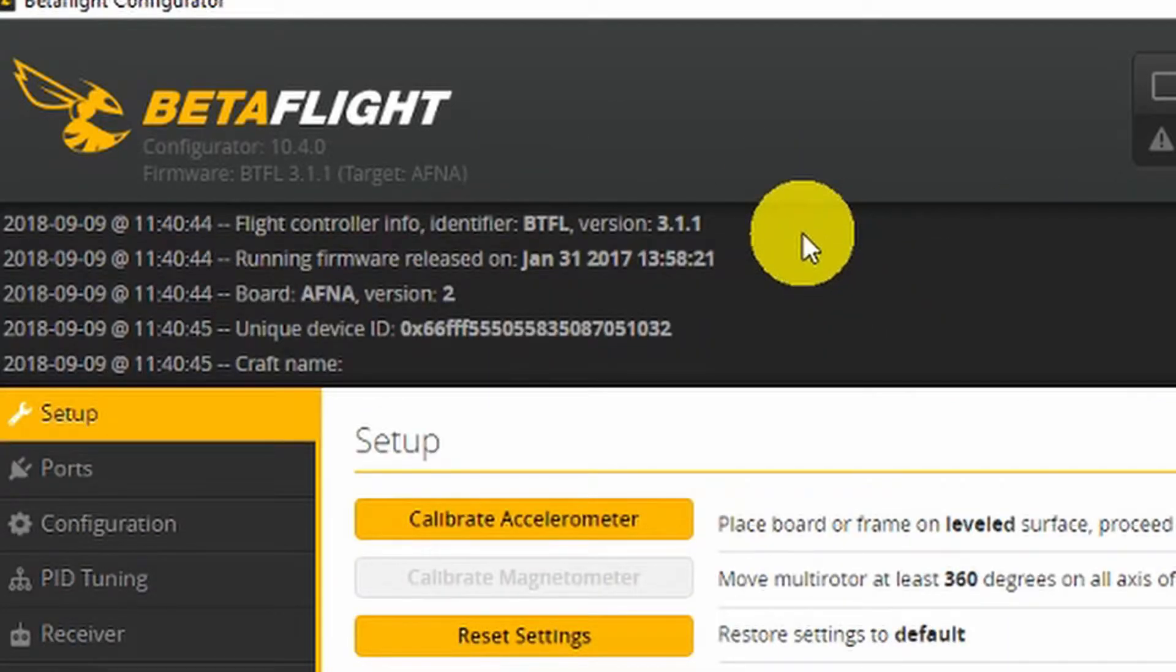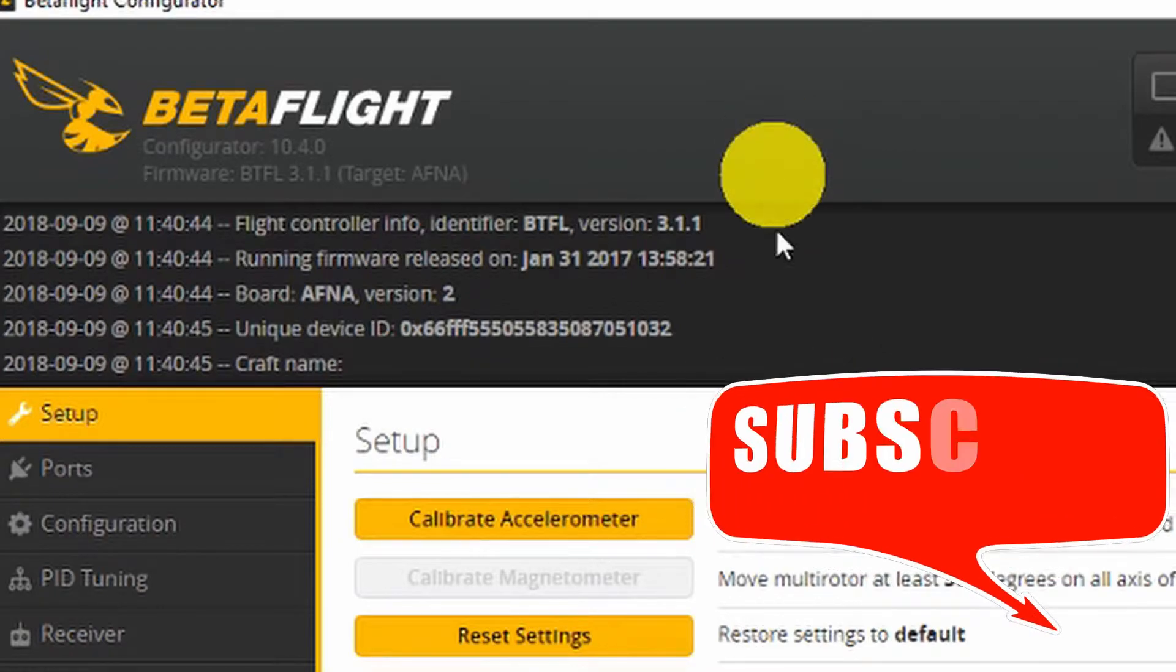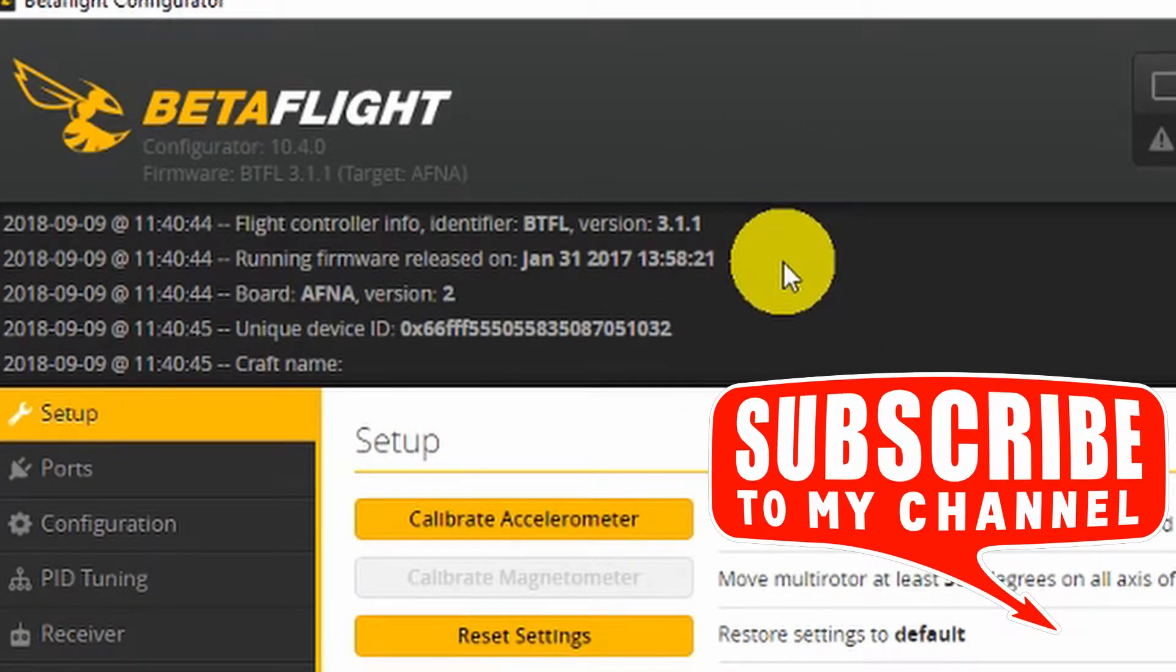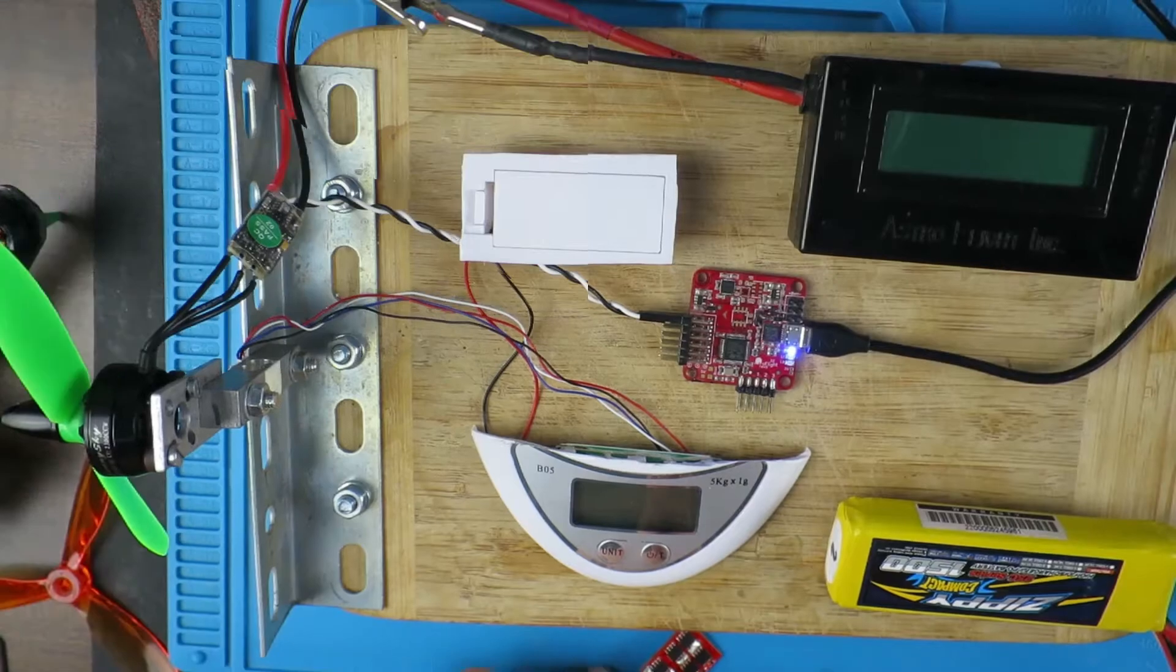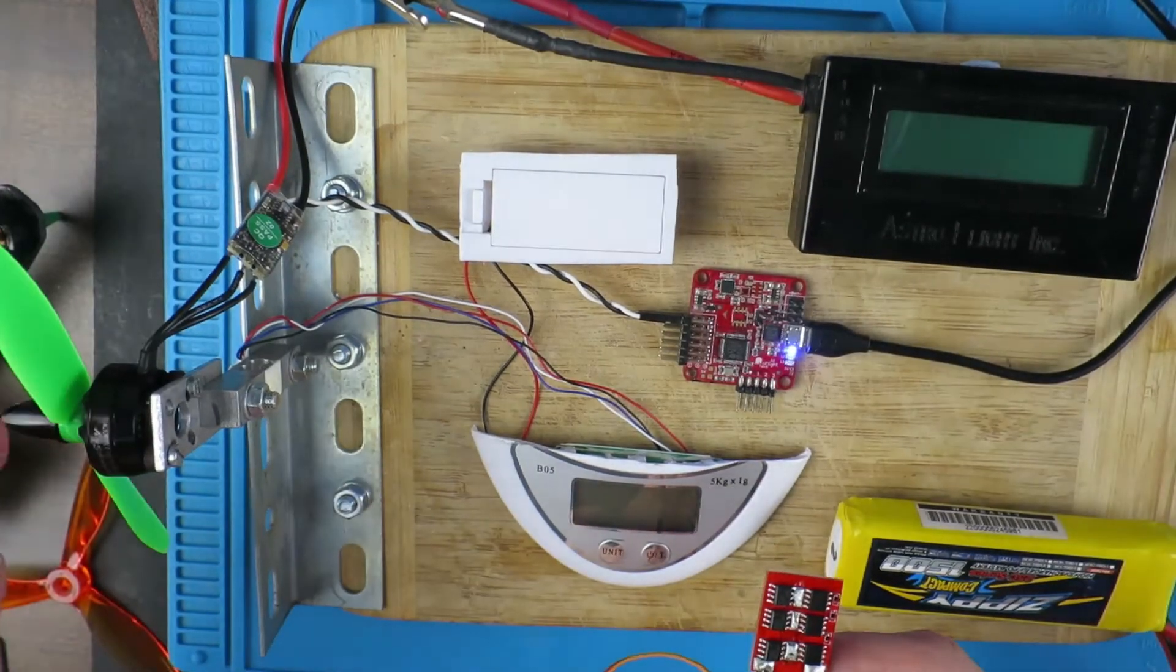There's nothing to stop you using the latest configurator to flash old hardware, so it's worth bearing that in mind. If you have an old F1 style Nazi 32 or equivalent, don't throw it in the bin. You can repurpose it as I show here. Previously with this same motor and prop configuration, I was getting a thrust reading of 423 grams at a current of 8.1 amps.